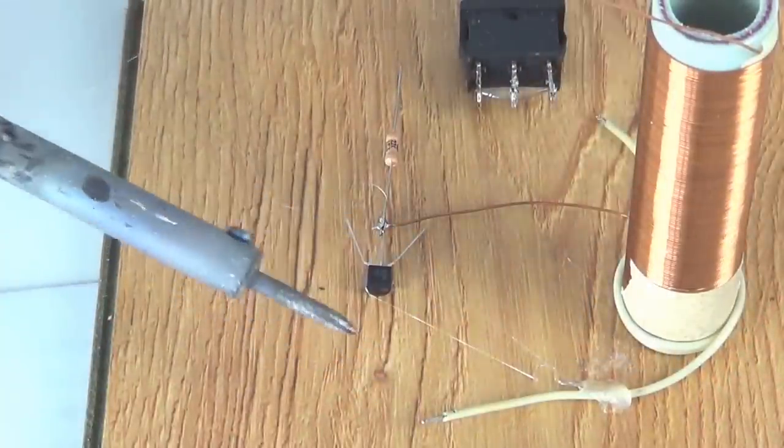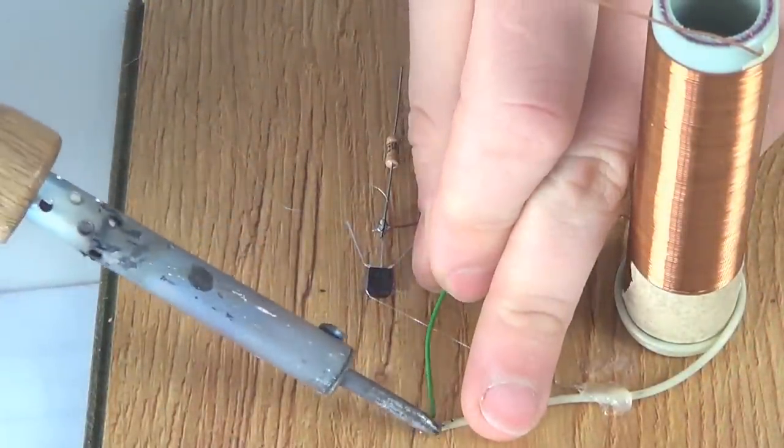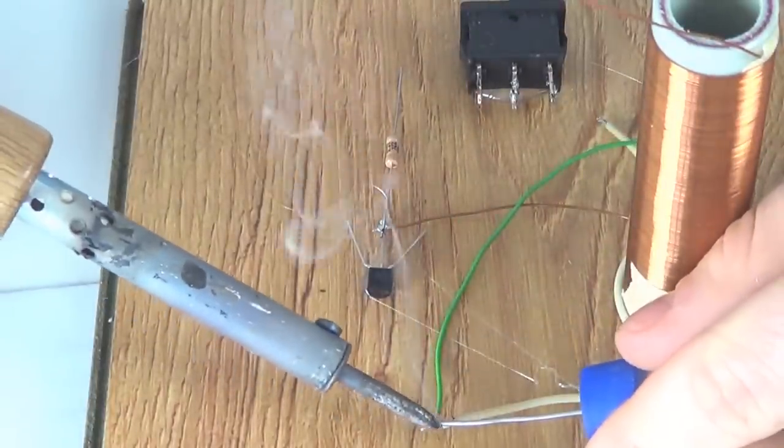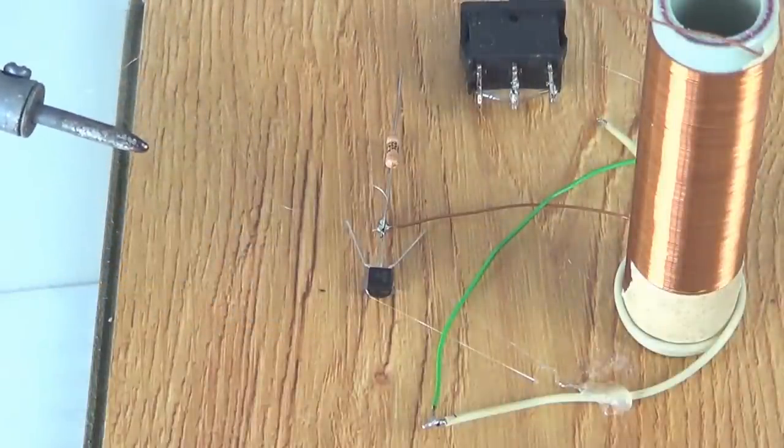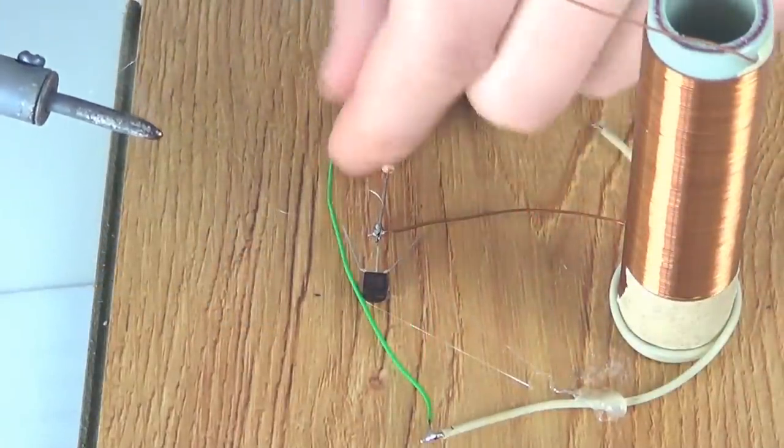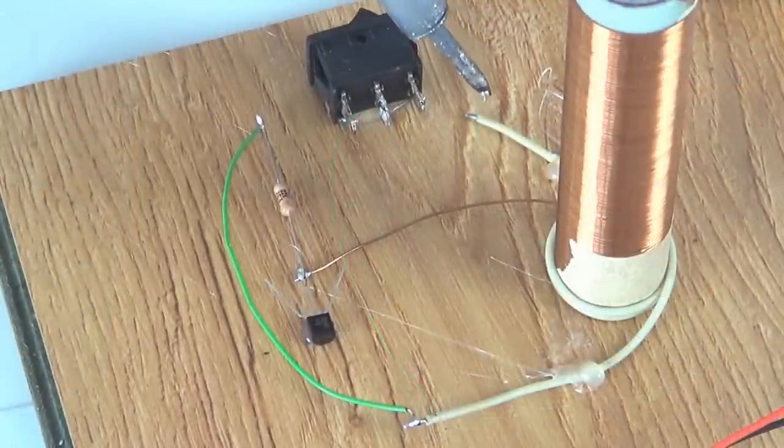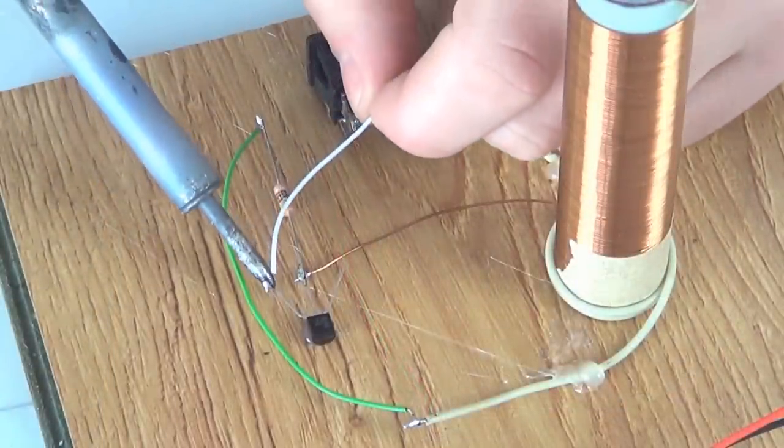Solder the upper end of the secondary spool to the resistor. And then we solder another end of the secondary spool to the right contact of the transistor.